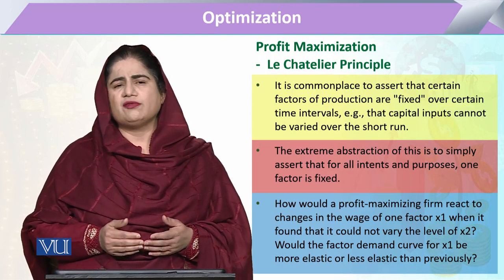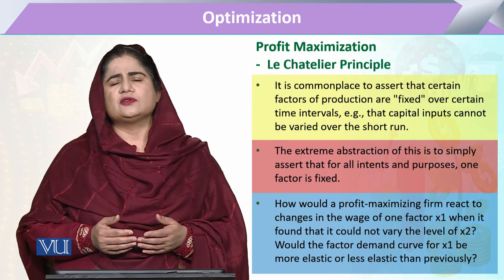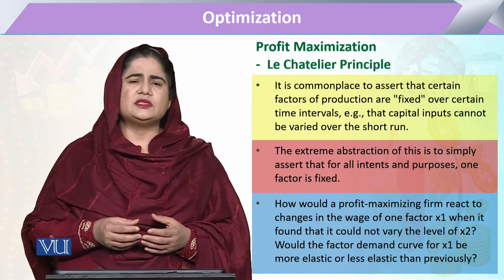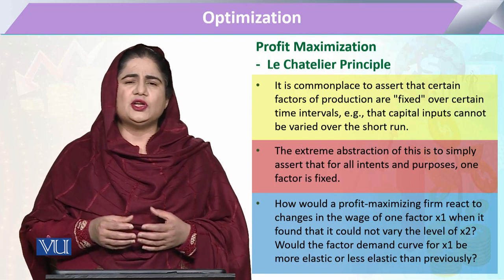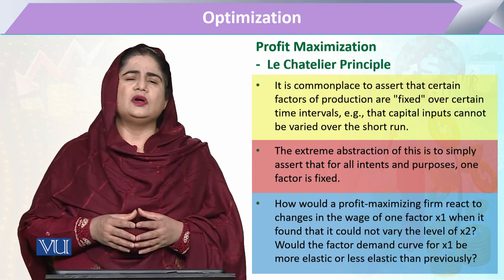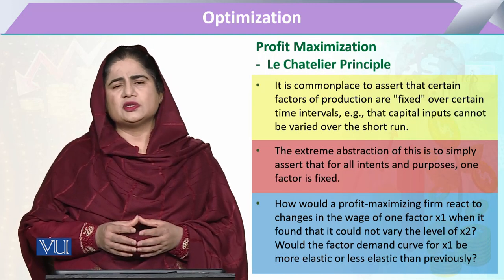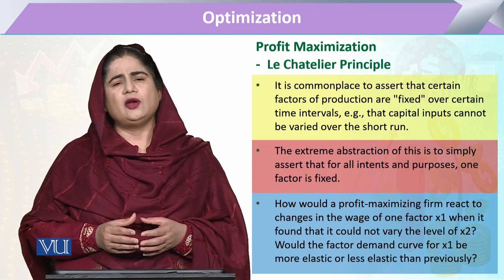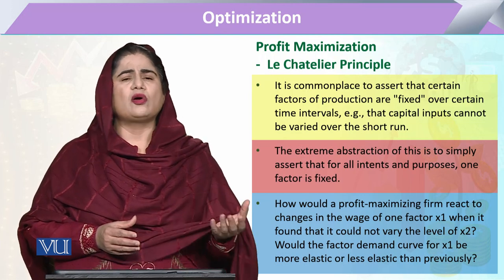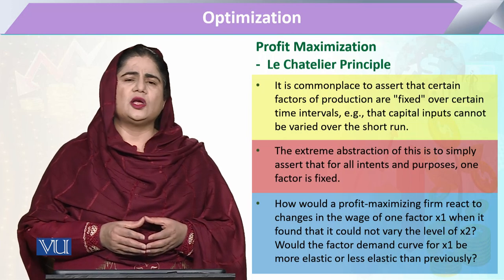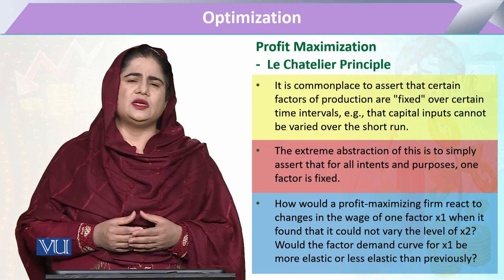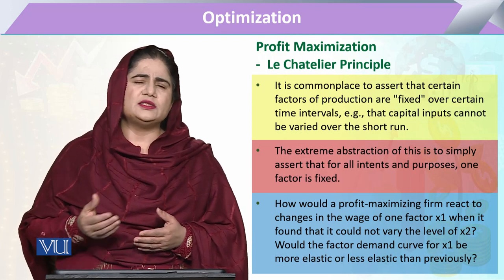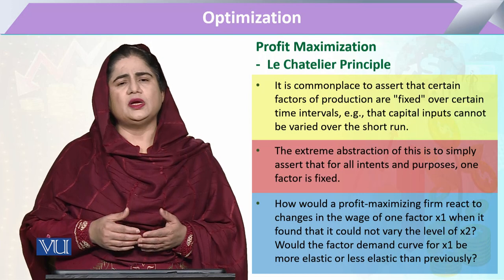The entrepreneur has to decide on variable factors and fixed factors. If we look at which factors have already established equilibrium, that equilibrium can be disturbed. If that equilibrium is disturbed, what will be the impact on the short-run aspect and the long-run aspect? And will short-run elasticity of output equal long-run elasticity, or can they differ?